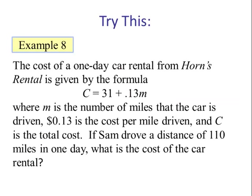Example 8: The cost of a one-day car rental from Horn's rental is given by the formula C equals 31 plus 0.13m, where m is the number of miles that the car is driven. 0.13 is the cost per mile driven, and C is the total cost. If Sam drove a distance of 110 miles in one day, what is the cost of the car rental? So we have our two variables here, m and c. M is the independent variable, C is the dependent, because total cost depends upon the miles driven. So the question asks if Sam drove a distance of 110 miles. We are asked to find the cost. M is the number of miles driven, so that is 110.